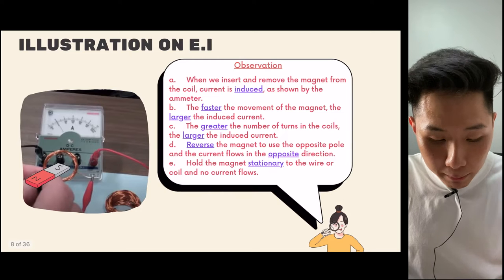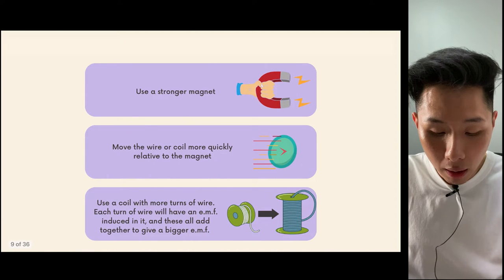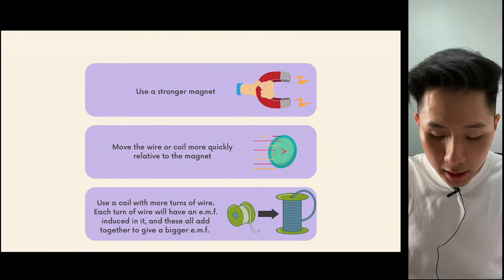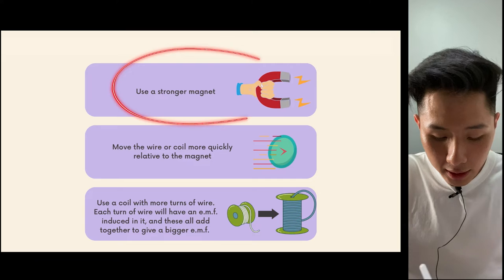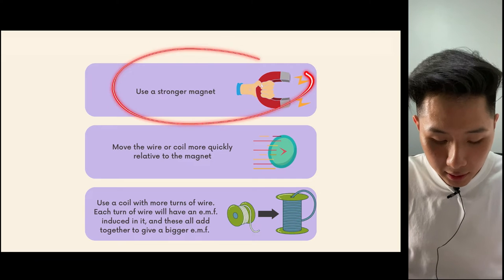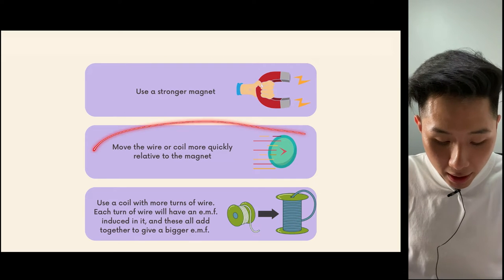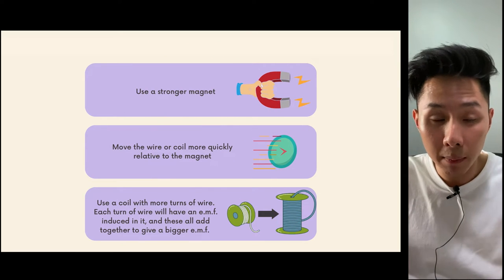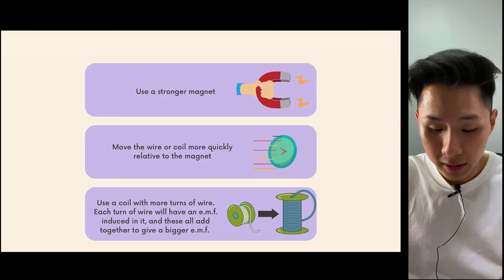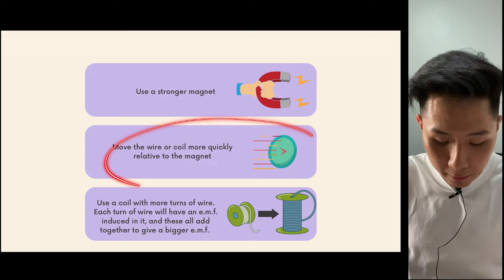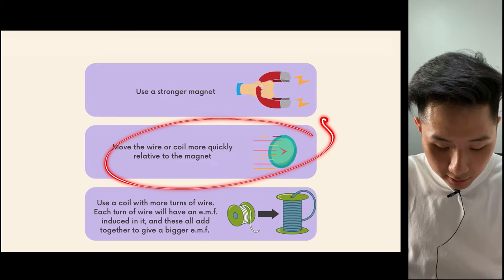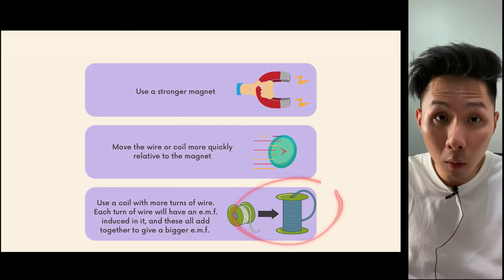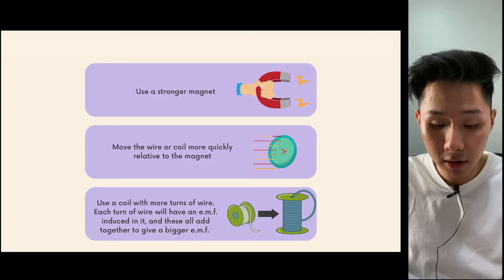Similarly to what we learned about generators, if you want a bigger effect you can use a stronger magnet. You can move the magnet into the coil, or move the coil faster — creating quicker relative movement. You could also use a coil with more wire so that more current can be induced.